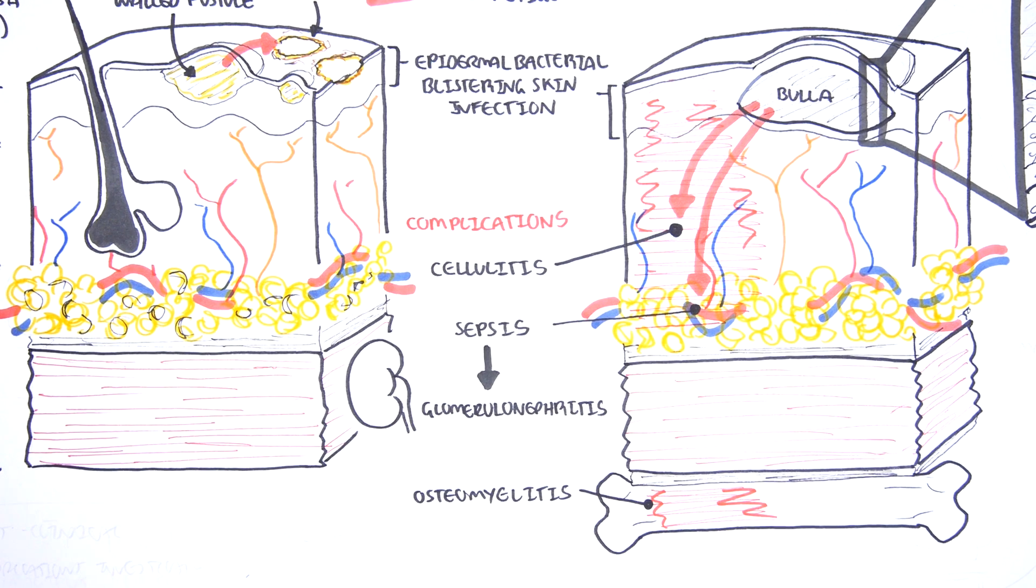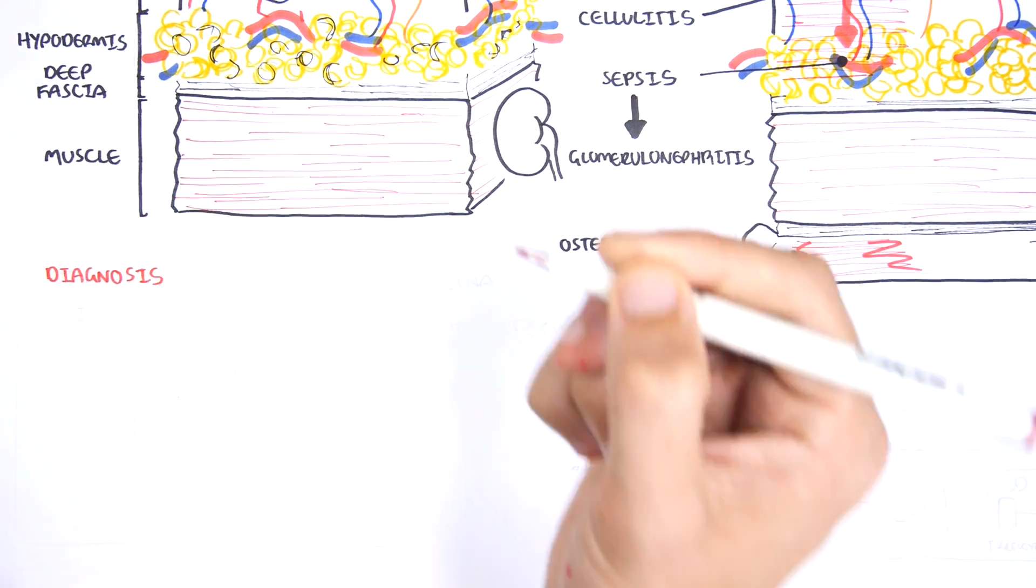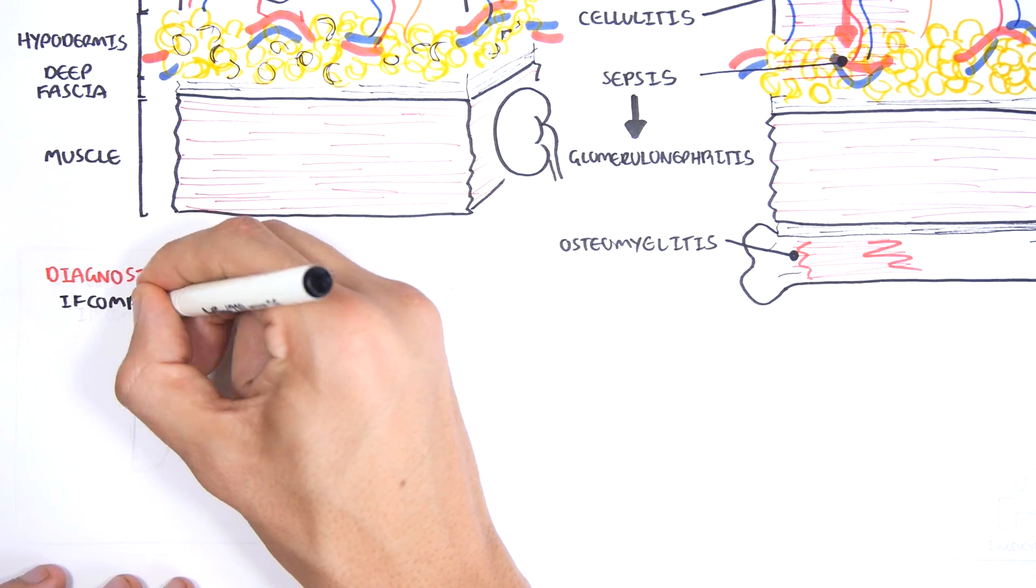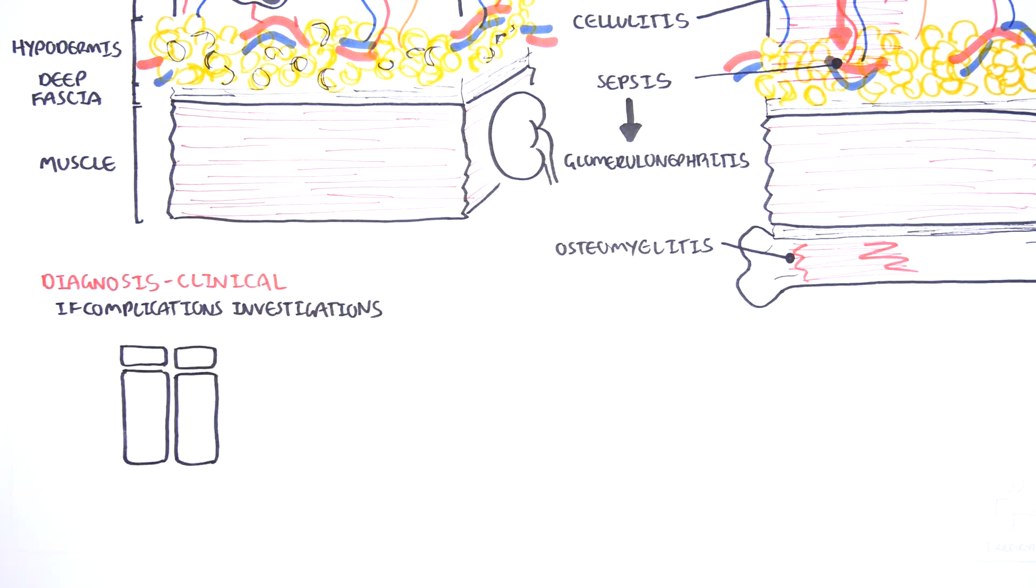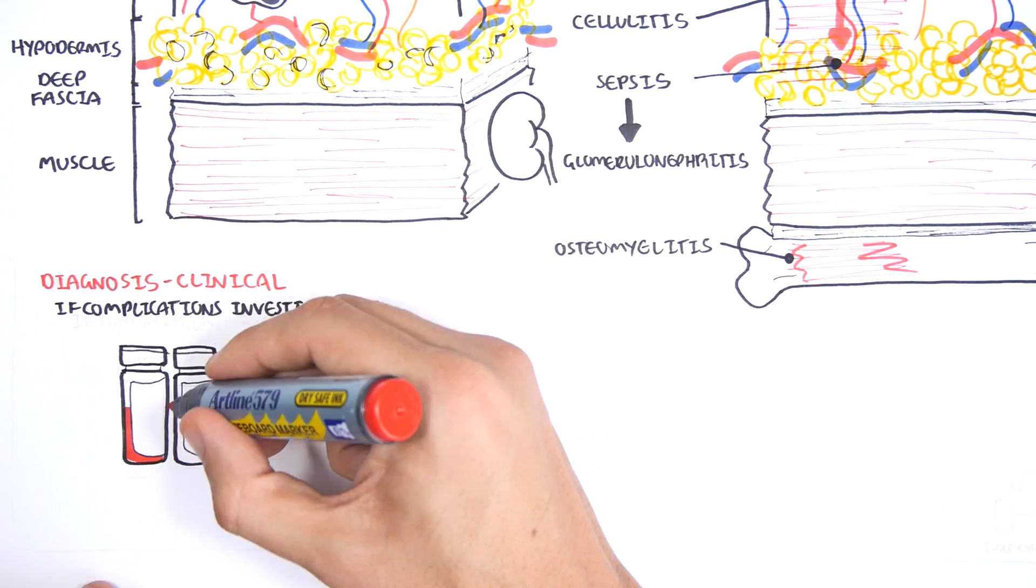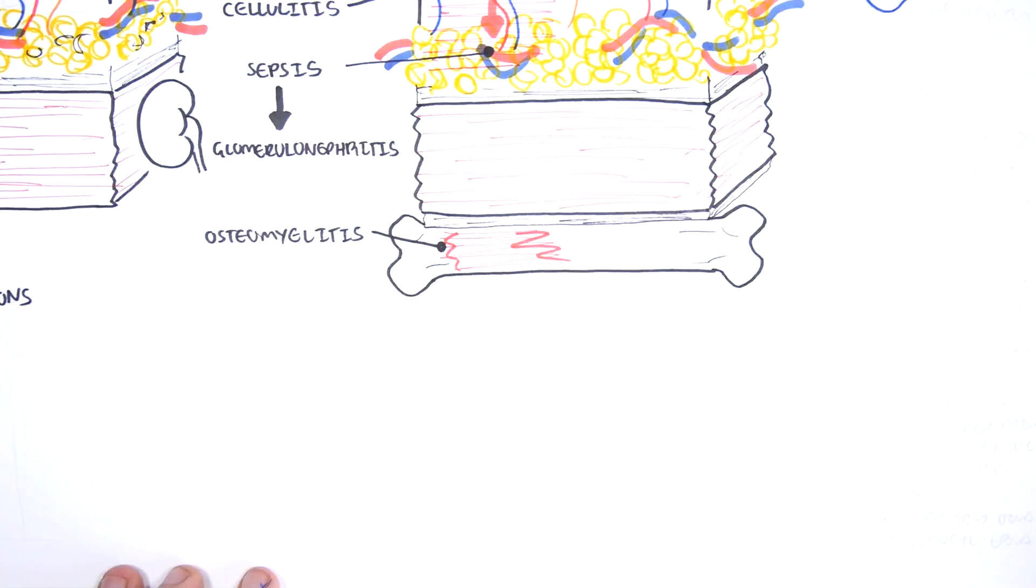Impetigo is diagnosed clinically, and investigations are not really needed. However, investigations can be ordered if complications are suspected. Investigations can include blood cultures and a blood workup.